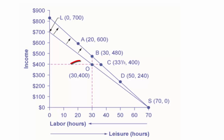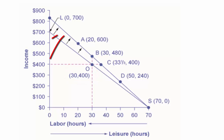Let's say that our original choice is point O on the lower opportunity set. A rise in our wage causes our opportunity set to swing upward. In response to the increase in wages, we can make a range of different choices available to us.